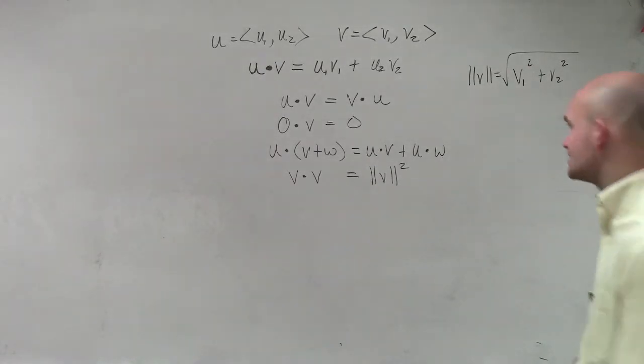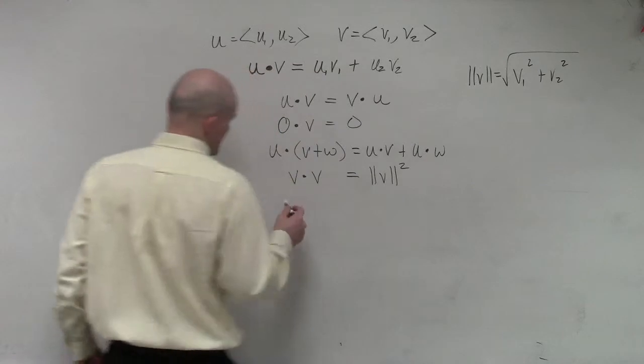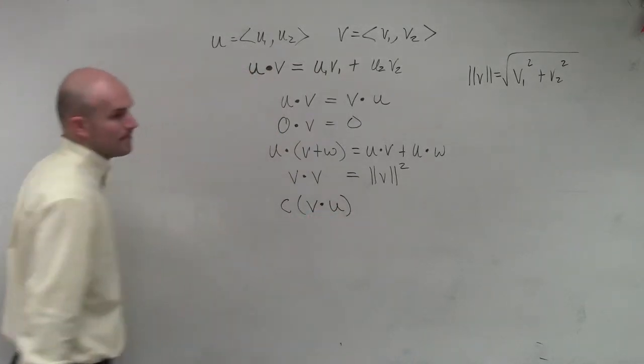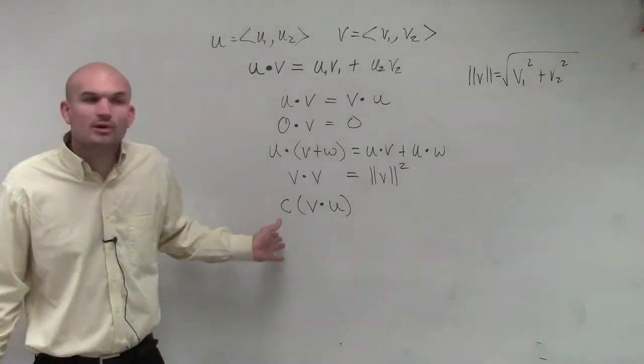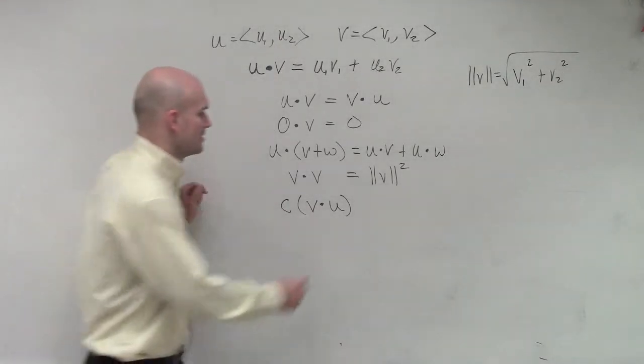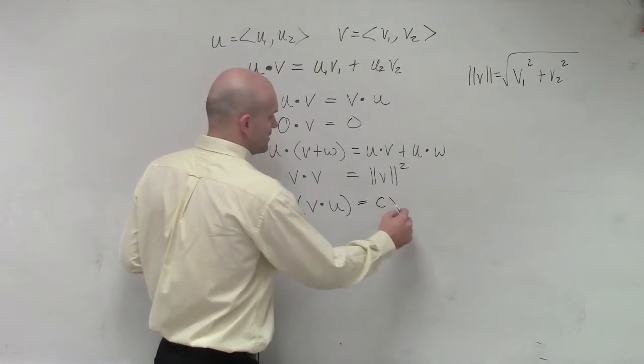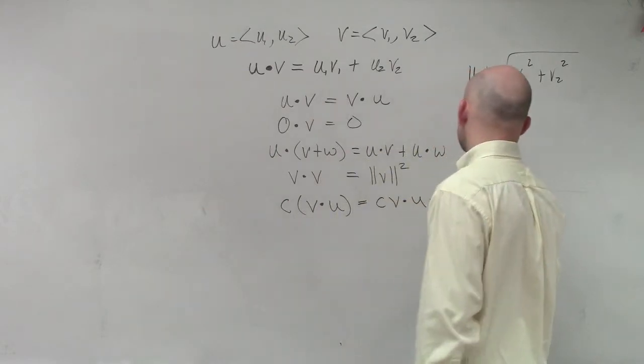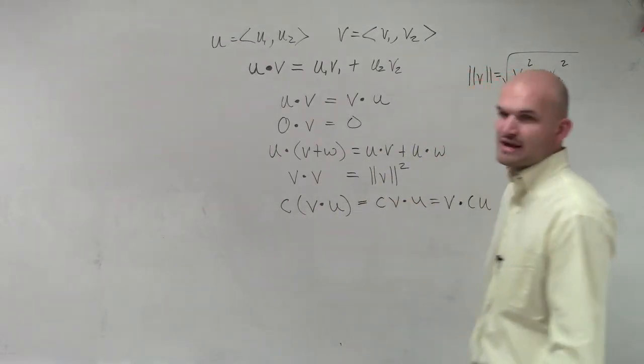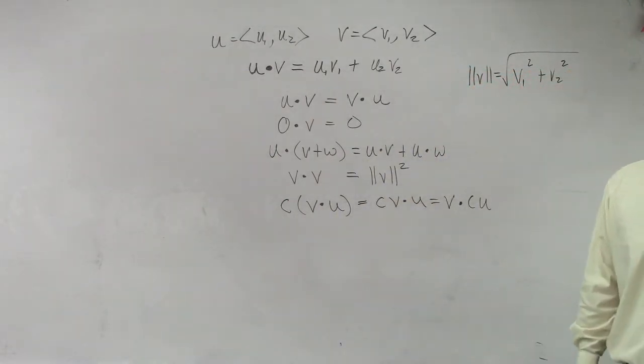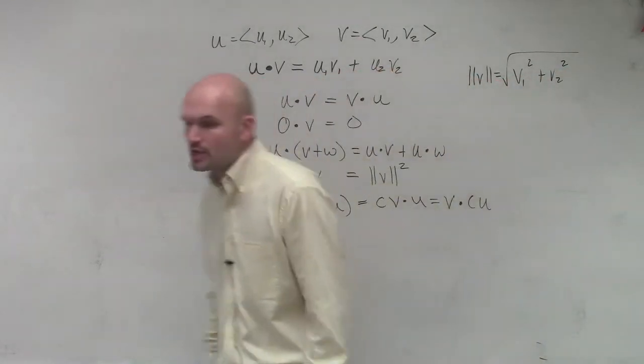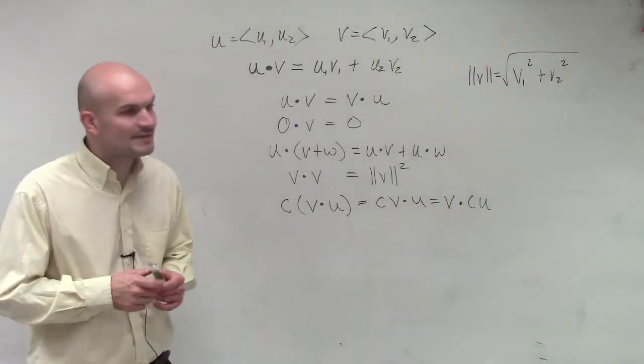And then we could also look at if you have a constant. So let's say I put a number up there, where c is going to represent any number. That's going to equal c times v dot u, which is also equal to v dot cu. So it doesn't matter where you multiply that constant through. You just need to make sure you multiply that constant through. So those are your general properties of the dot product.